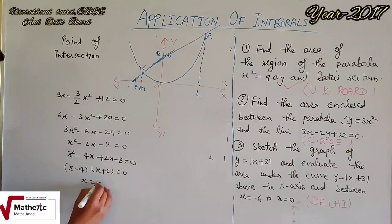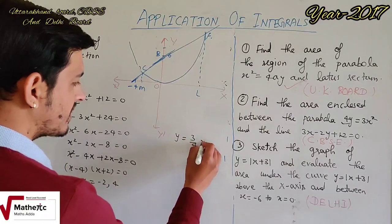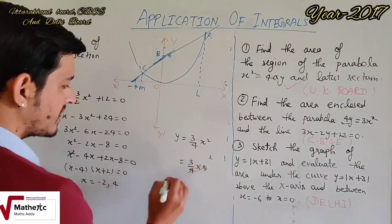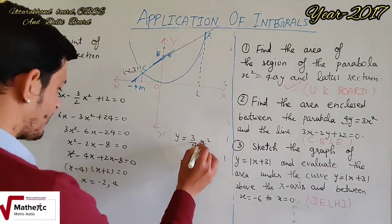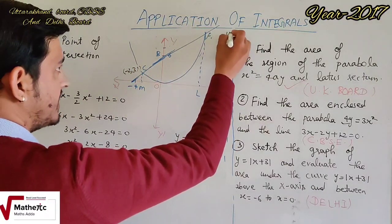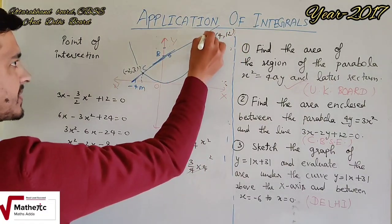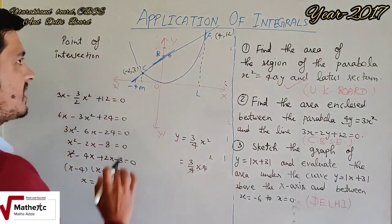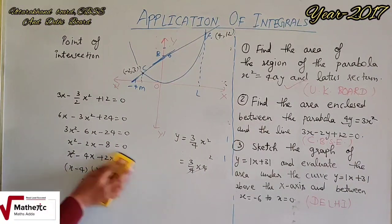x की दो values: x = -2 और x = 4। y = (3/4)x² से: x = -2 रखने पर y = 3, और x = 4 रखने पर y = 12। Point of intersection निकल गए। दोनों curves जहाँ intersect करती हैं उसके लिए दोनों equations solve करनी होती हैं।